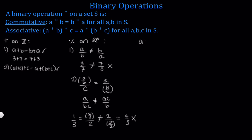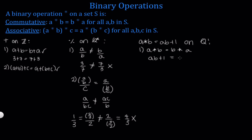Let's do another example. This time I'll define the binary operation A star B equals AB plus 1 on the set of rationals. We'll assume it is a binary operation and check for commutativity first. For commutativity we need A star B to equal B star A, which means AB plus 1 must equal BA plus 1. From elementary math, A times B equals B times A, so the order doesn't change the result. Therefore this operation is commutative.